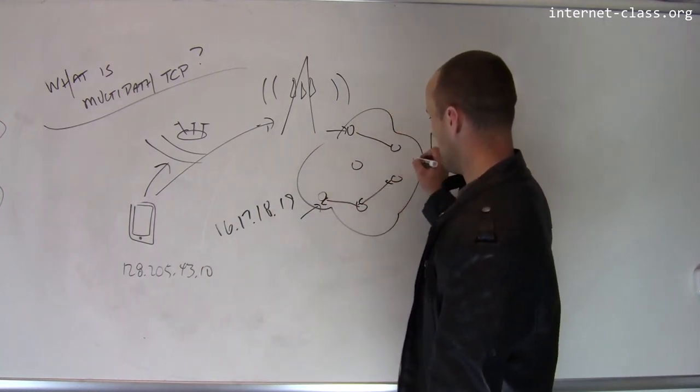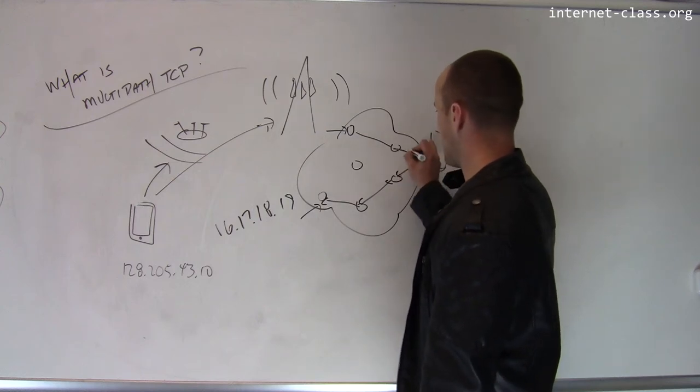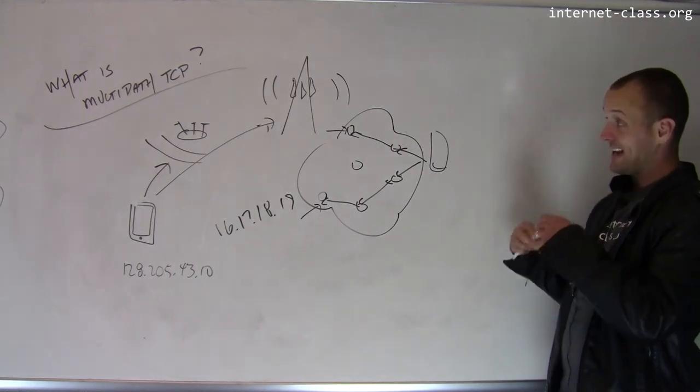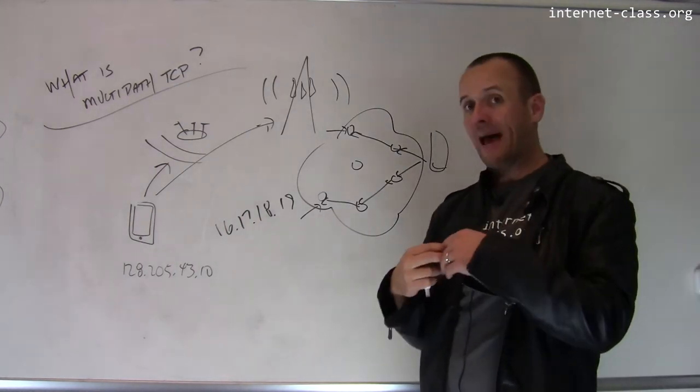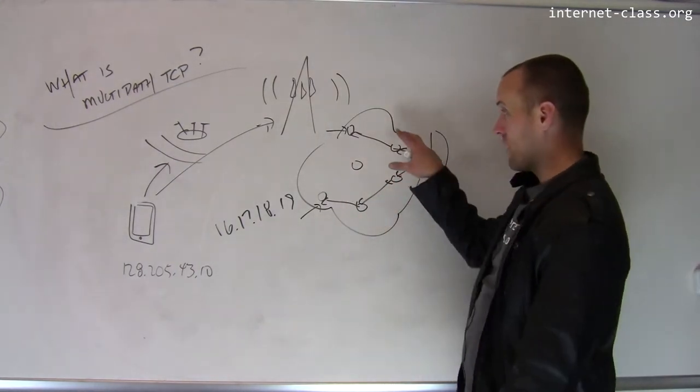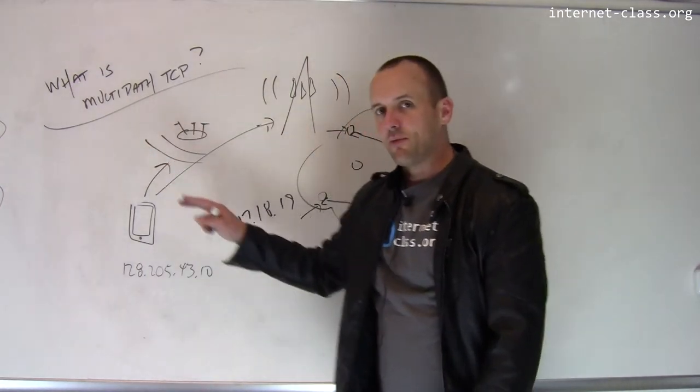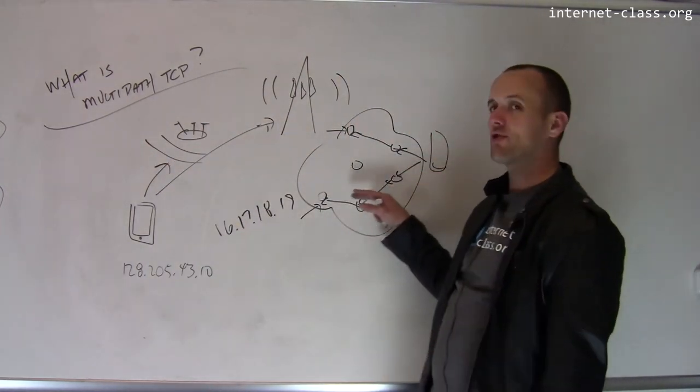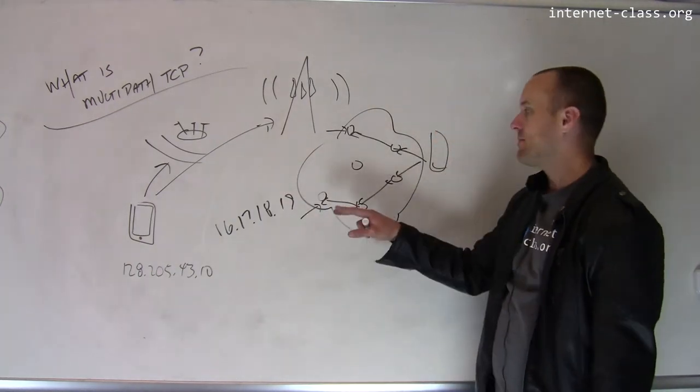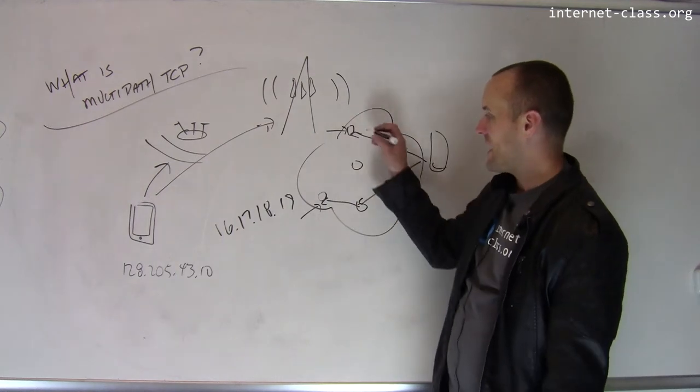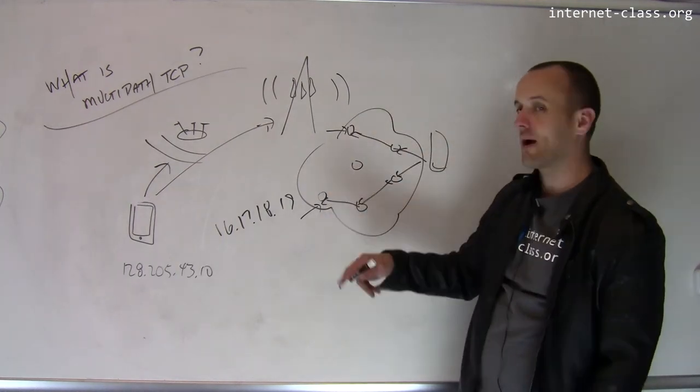So one of the routes could be here, another route could be here. And so there's something nice about Multipath TCP in that it actually allows you to exploit what's called path diversity. So if one of these connections starts to be slow, Multipath TCP will try to direct more traffic down the other connection. Same thing if this connection gets slow.